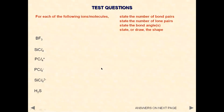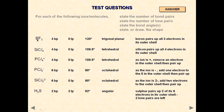Let's have a look at the answers. For BF3: three bond pairs, zero lone pairs, bond angle 120 degrees, and the shape is trigonal planar. The explanation is that boron is in group three, it has three electrons in the outer shell, and all of them are involved in covalent bonds. For SiCl4: four bond pairs, no lone pairs, tetrahedral shape, bond angle 109.5 degrees.